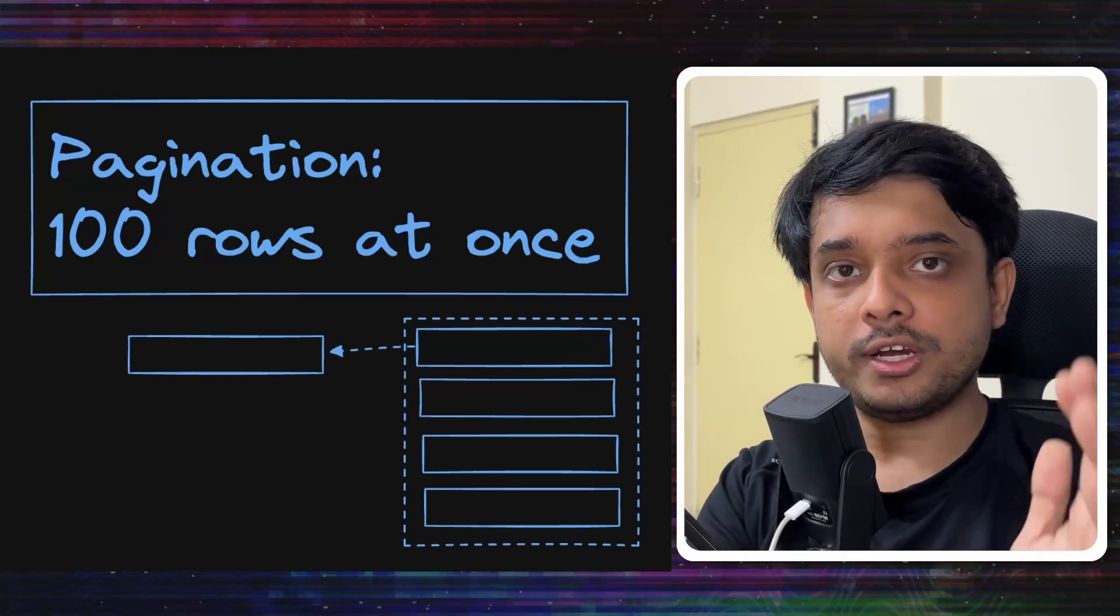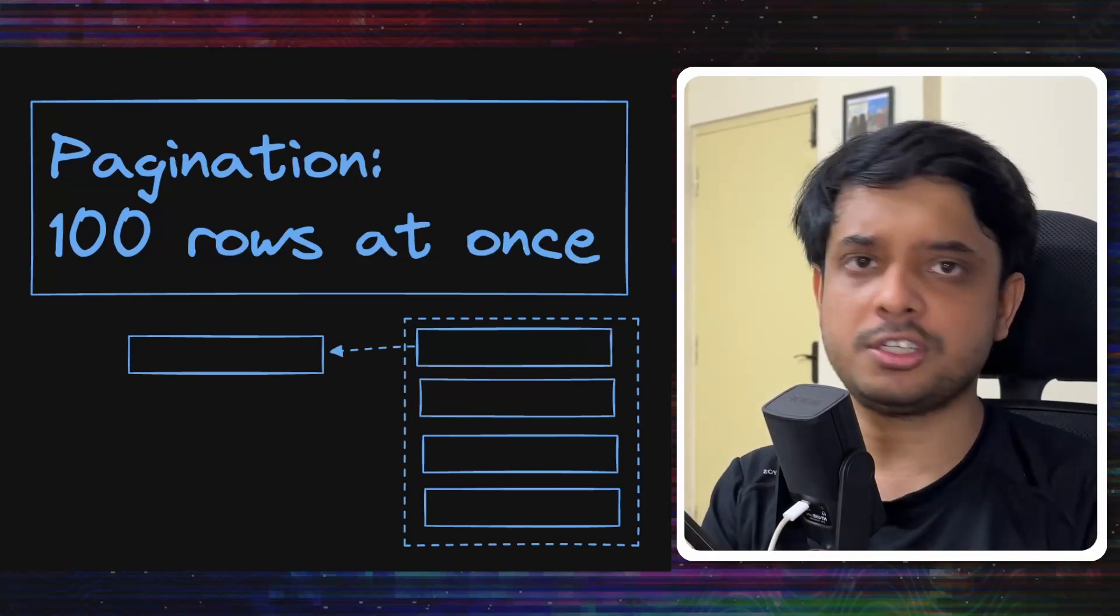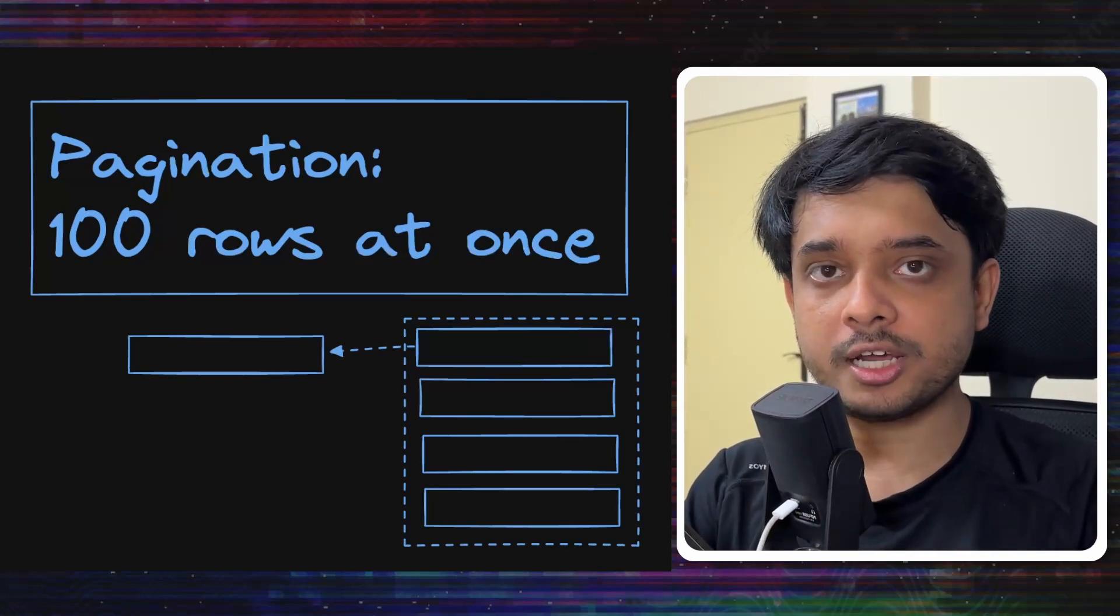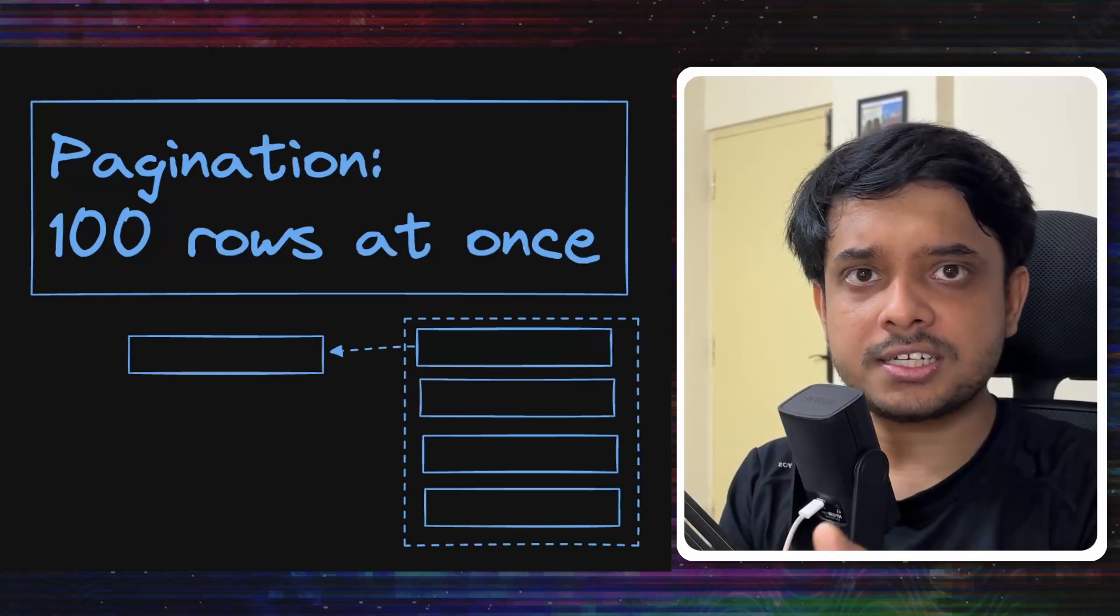This marker will identify from where to start reading the data for the next request. So what the client will do when it receives the first 100 rows, it will take it, it will process it or do whatever it wants and then send a request back to the database along with that marker.